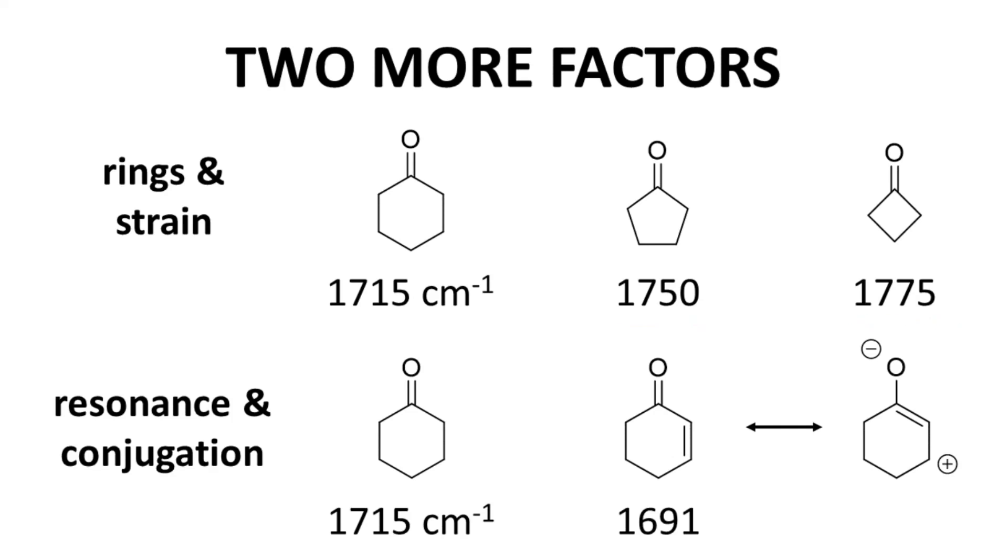Another factor is resonance and conjugation. Here is cyclohexanone. The carbonyl stretch is around 1715. If you put a double bond in the ring to make an unsaturated ketone, the signal moves to 1691 wave numbers.